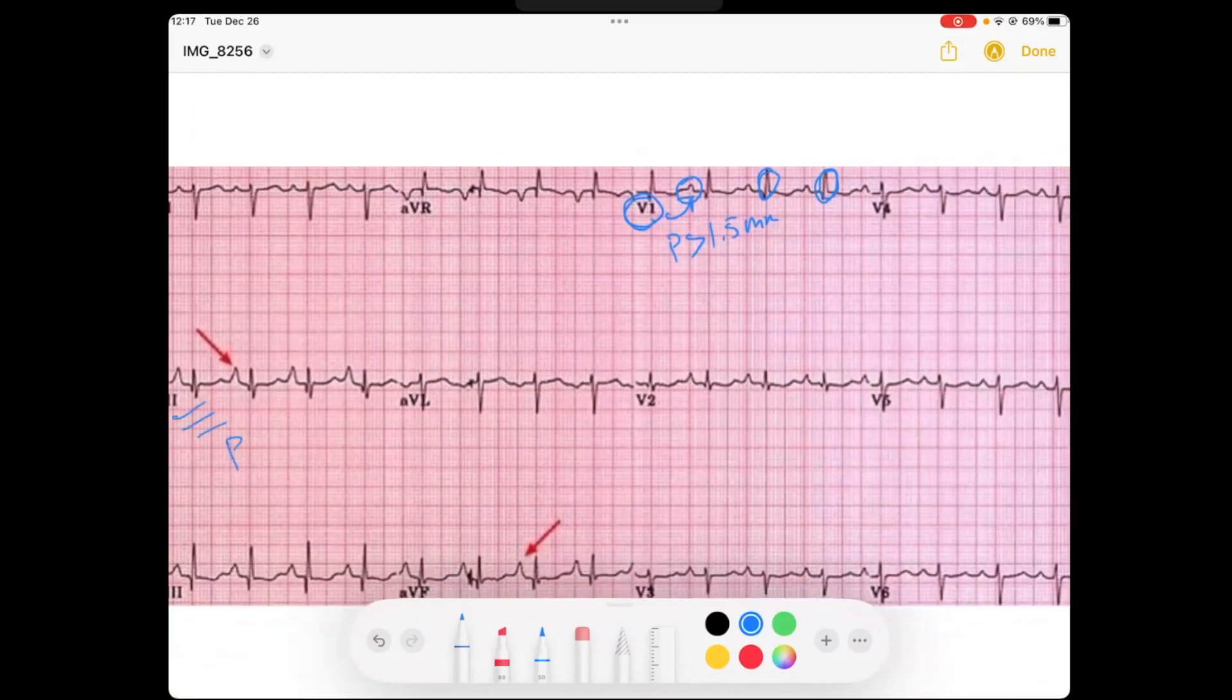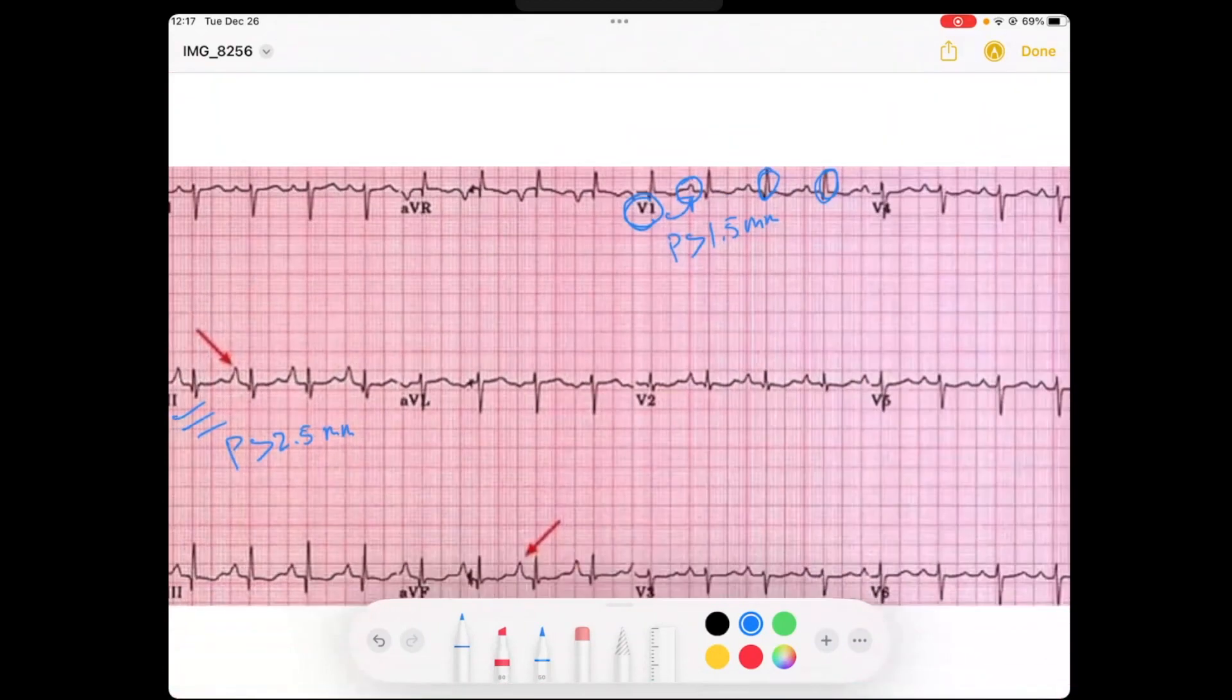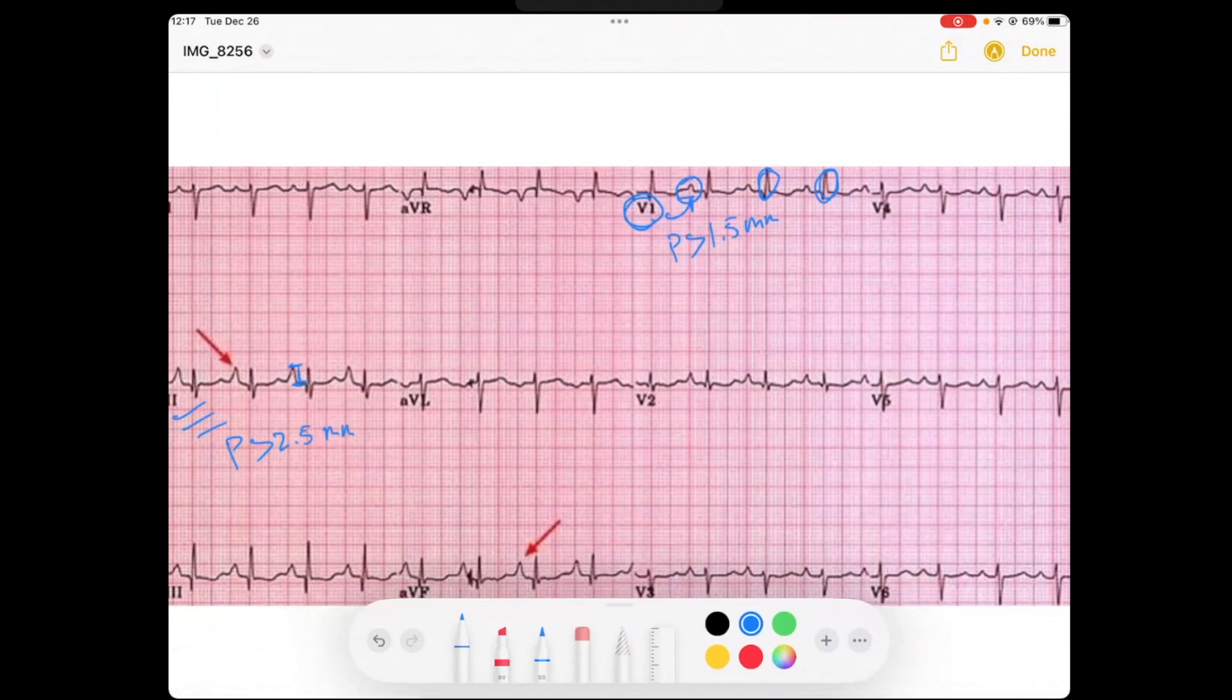So let's look over at lead 2. We said lead 2, if the P-wave is greater than 2.5 millimeters in amplitude, then we would have our diagnosis of right atrial enlargement. So if you look here, I would say that if I measure from superior to inferior, that is somewhere in between 4 to 5 millimeters. So there's my criteria for right atrial enlargement.